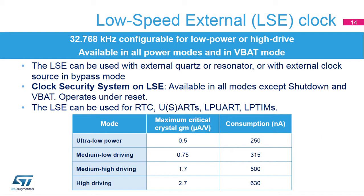The 32.768 kHz low-speed external oscillator can be used with an external quartz or resonator, or with an external clock source in bypass mode. The oscillator driving capability is programmable: four modes are available, from ultra-low power mode with a consumption of only 250 nA to high-driving mode. A clock security system monitors for failure of the LSE oscillator; in case of failure, the application can switch the RTC clock to the LSI. The CSS is functional in all modes except shutdown and VBAT, and also under reset. The LSE can be used to clock the RTC, the USARTs or low-power UART peripherals, and the low-power timers.